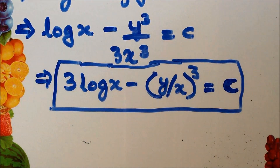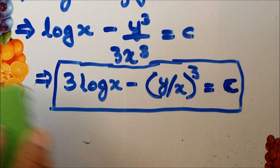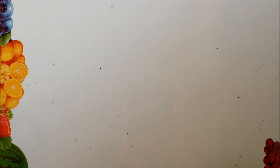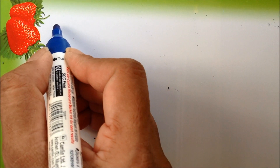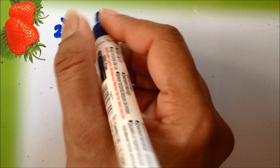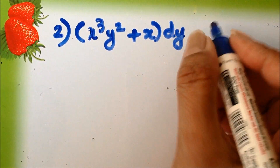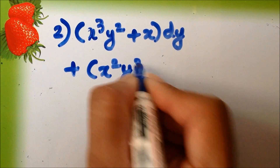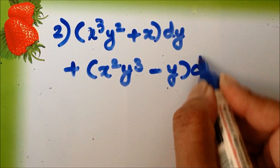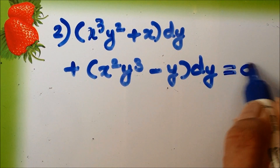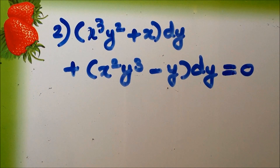You are encouraged to go back to any part of the video if you have not followed or understood anything. We will now do one more example. The second example has the equation x³y² + x dy + x²y³ − y dy = 0, and we will continue with its solution in the next video. Thank you.